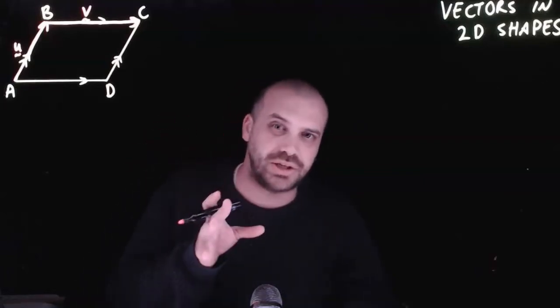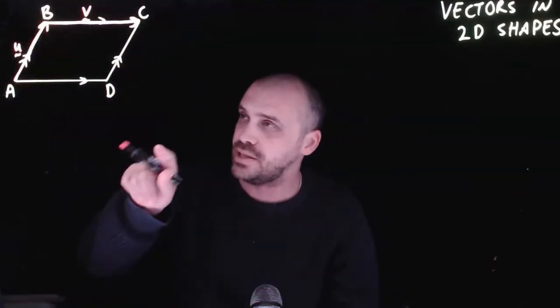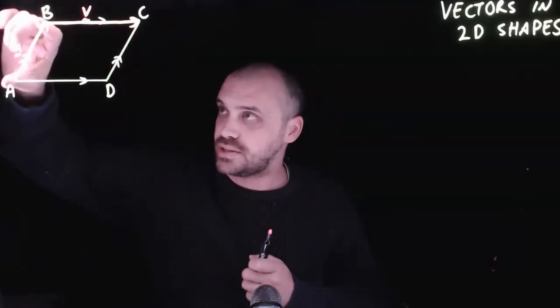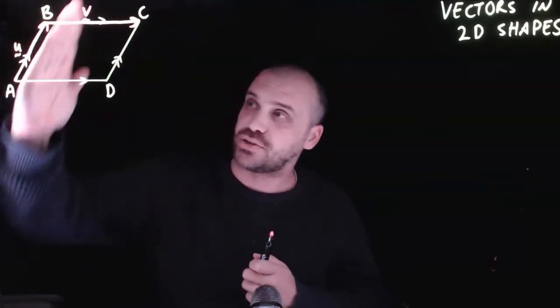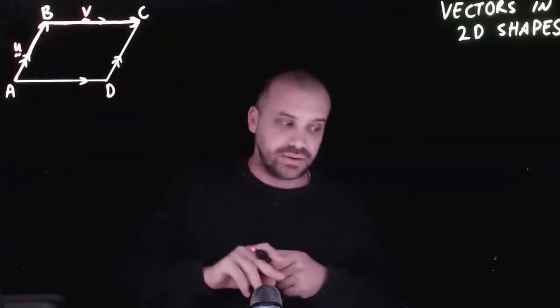So you're going to love this, it's vectors in 2D shapes. I've got a parallelogram here, A, B, C, D. This is vector U, moving in that direction. And this, I'm going to call vector V.